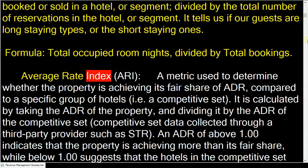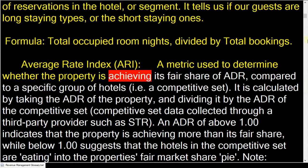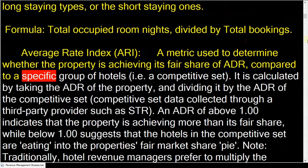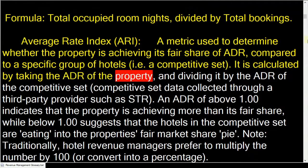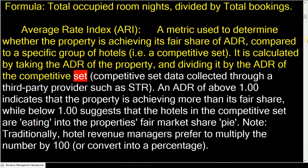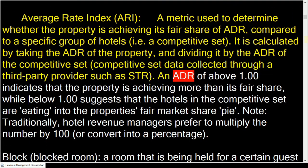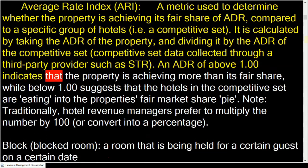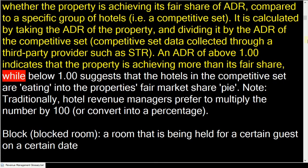Average rate index is a metric used to determine whether the property is achieving its fair share of ADR compared to a specific group of hotels. It is calculated by taking the ADR of the property and dividing it by the ADR of the competitive set.